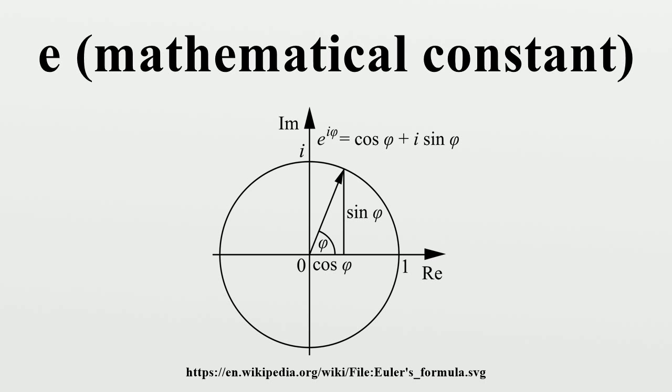Euler started to use the letter e for the constant in 1727 or 1728, in an unpublished paper on explosive forces in cannons. And the first appearance of e in a publication was Euler's Mechanica.